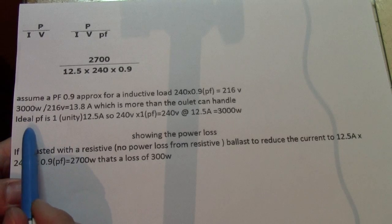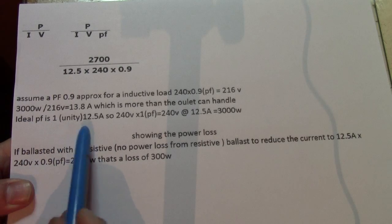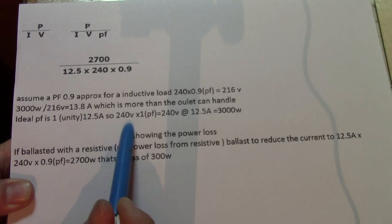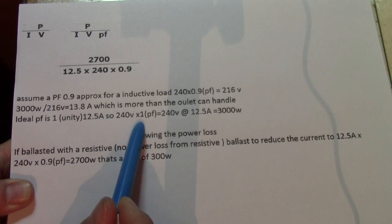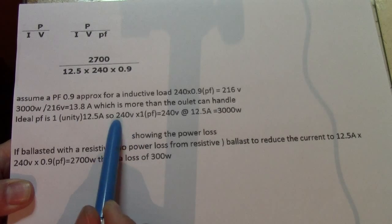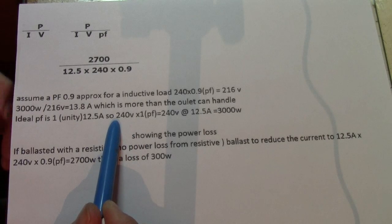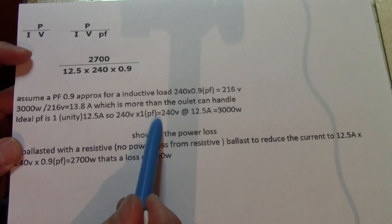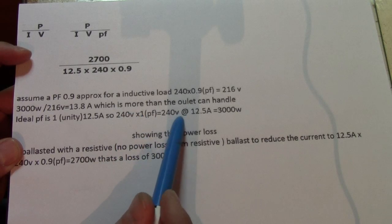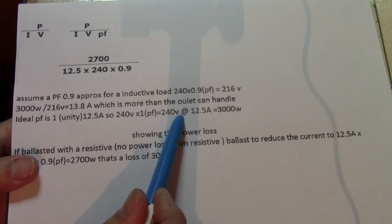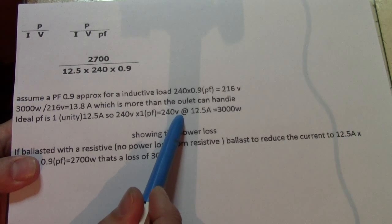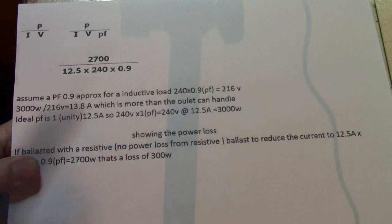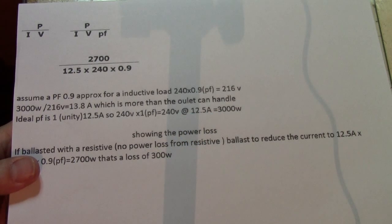So, we know the ideal Power Factor is 1, which is unity. So, 12.5 amps, 240 volts, Power Factor of 1. So, that is 240 volts times 1, which you all know is going to be 240. So, we've got it ballasted to 3000 watts. So, that means we've got 12.5 amps at 3000 watts. That is perfect.